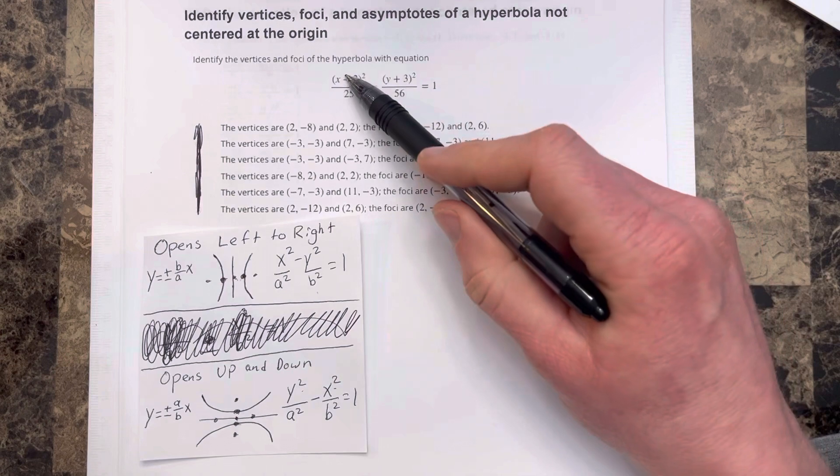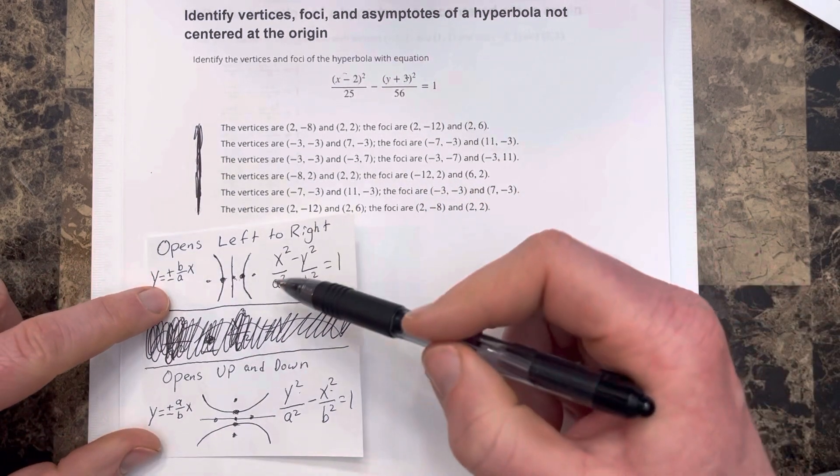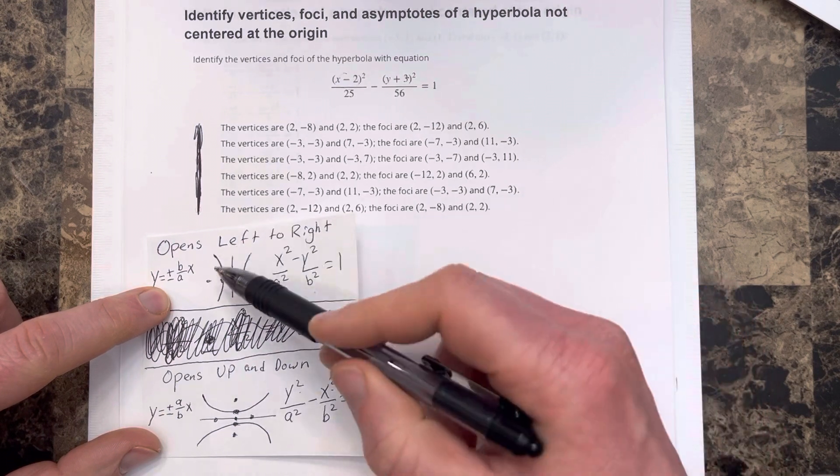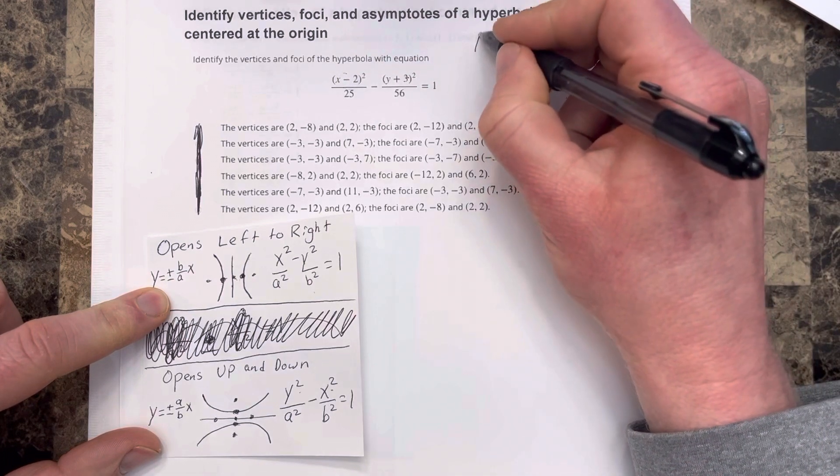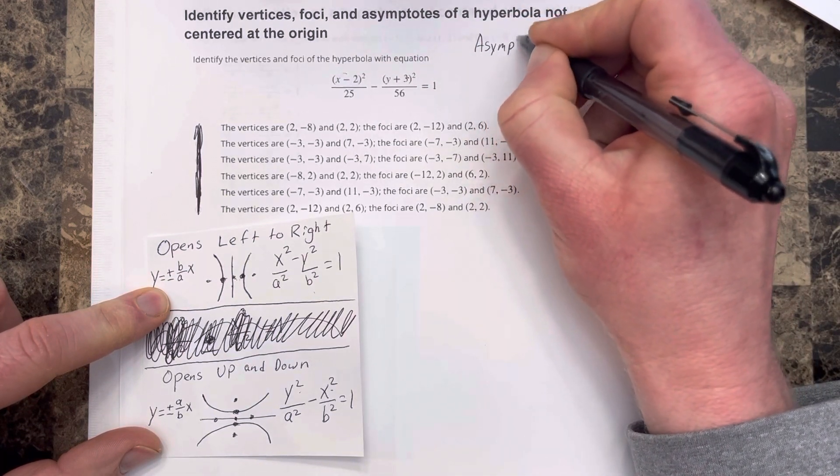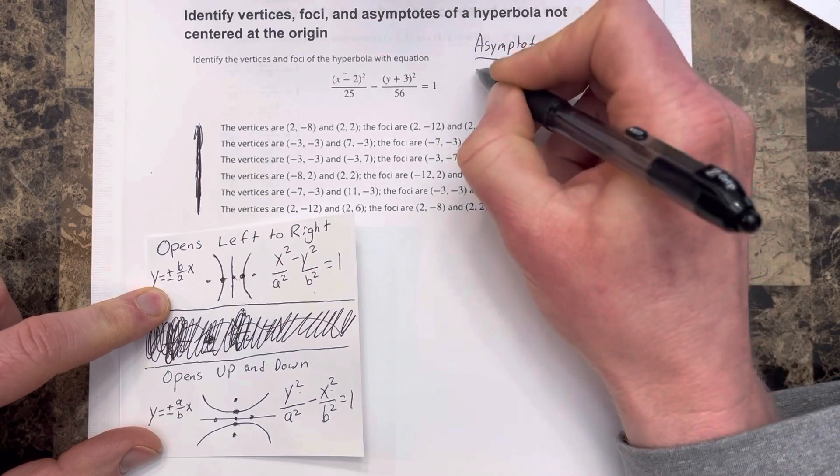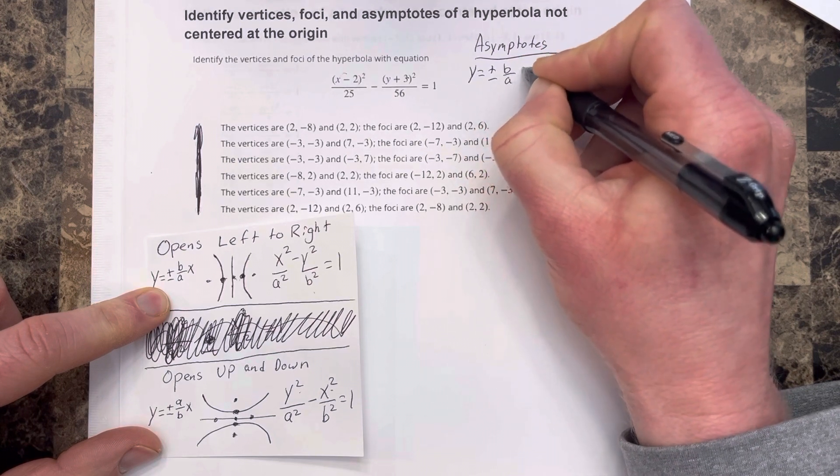I want to notice that the x value comes first, then the y value, which tells us that we're dealing with this type of equation, which means we're opening left and right, and it tells us that our asymptotes are going to be found using this equation y equals plus minus b over a x.